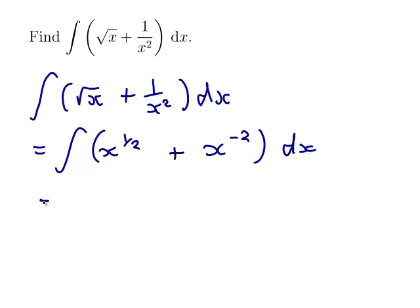So power up by 1, so that'll go up to 1 and a half which is 3 on 2 and I divide by that new power so that'll be 2 thirds. And the minus 2 will go up to minus 1 and we'll divide by that new power plus c.